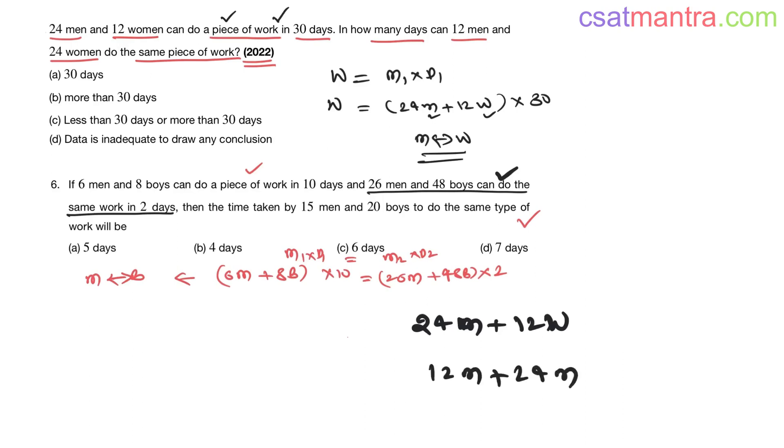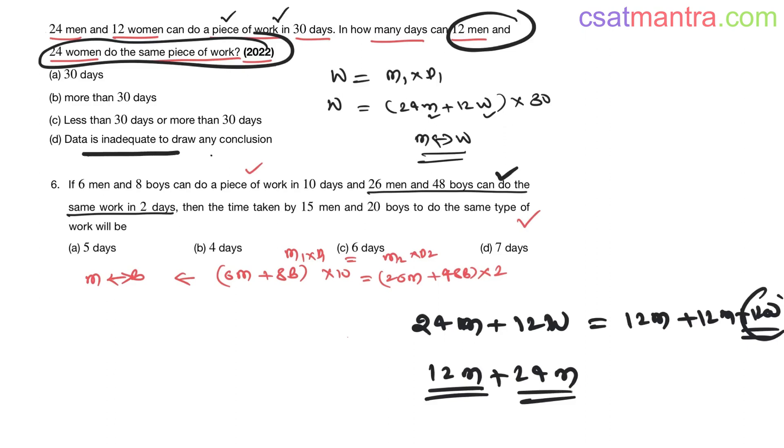We cannot rewrite 24m and 12w to get this 12 men plus 24 women. See, you can write 24m as 12m plus 12m plus 12w, so 12m we are getting, but 24w we cannot get from this 12 women. So we cannot rewrite and get this statement. It's not possible to find out the solution here. Data is inadequate to draw any conclusion.